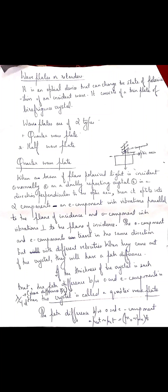Hi students. In today's class we are going to study about wave plates or retarders. A wave plate is an optical device that can change the state of polarization of an incident polarized wave. It consists of a thin plate of birefringent crystal having a definite thickness.